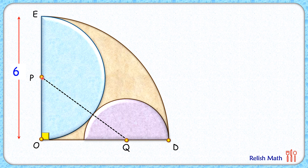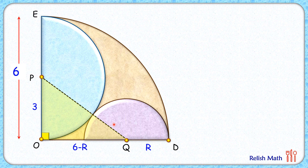In triangle POQ, PO is the radius of the blue circle, that is three centimeters. Let's assume for the purple circle the radius is r. Thus OQ will be the radius of the quadrant minus r, that is six minus r. And PQ will be the radius of the blue semicircle plus the radius of the purple semicircle, so it will be three plus r.